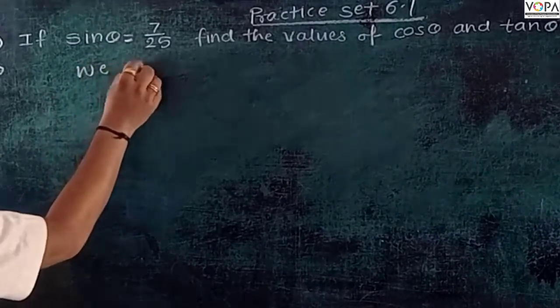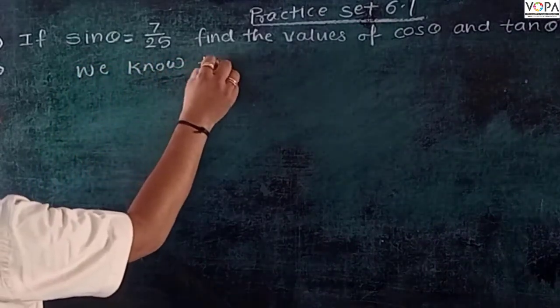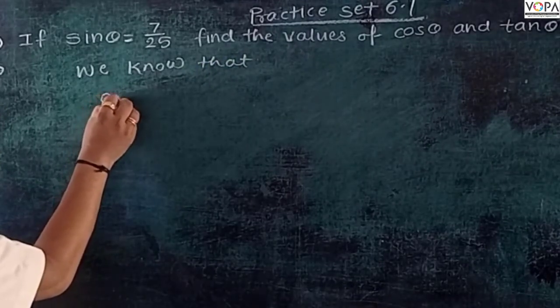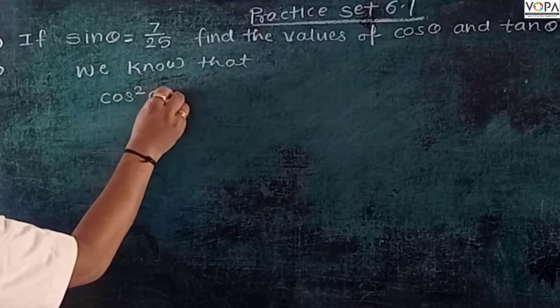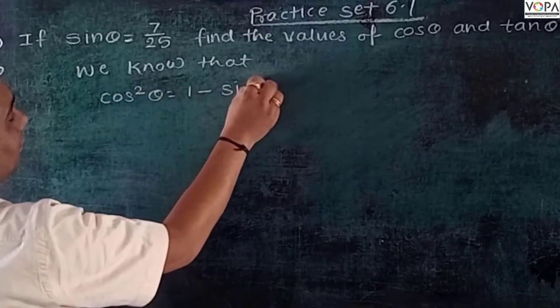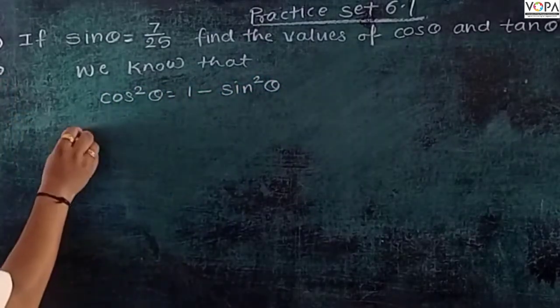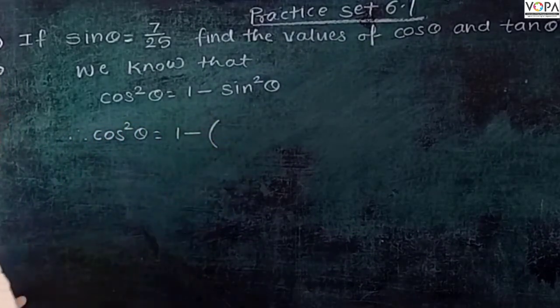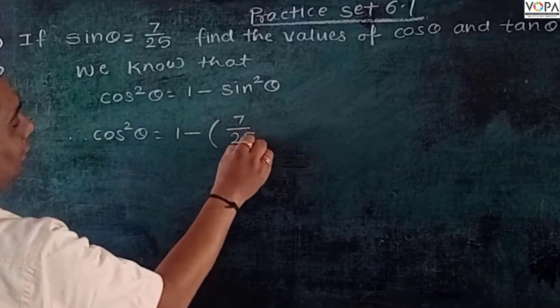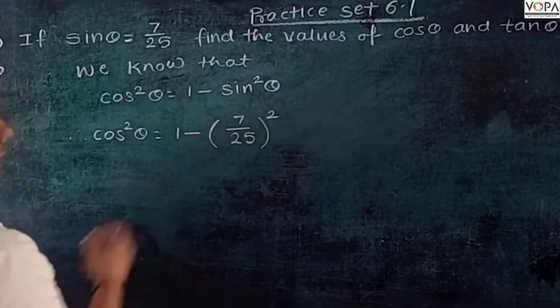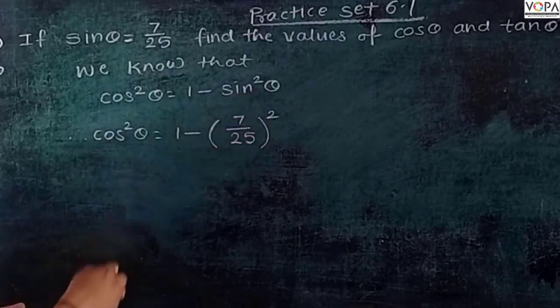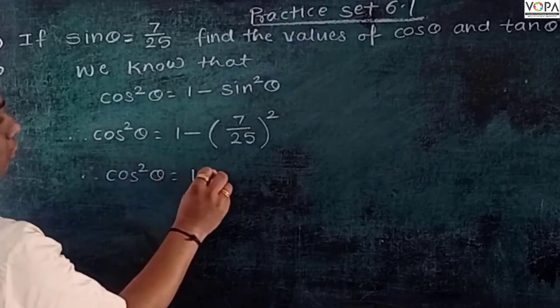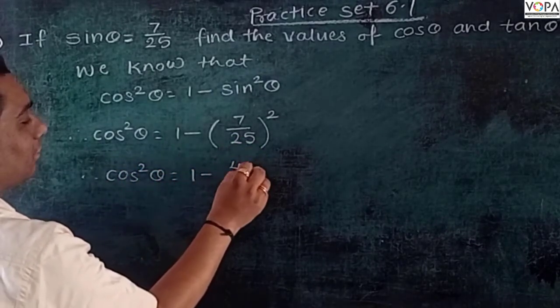So we know the identity that cos² θ = 1 - sin² θ. Therefore cos² θ = 1 - (7/25)² because here the square of sin is given.